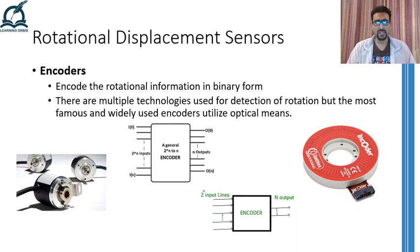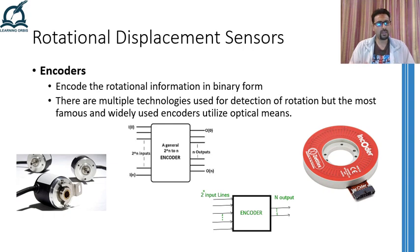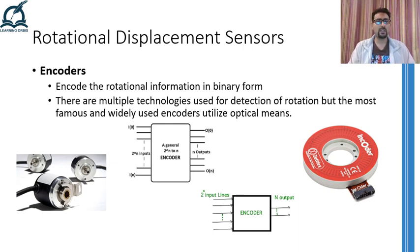The name encoder just means something that can encode or translate information from one state to another state. Therefore, any device that is converting information from one form to some other form, preferably in binary form, is called an encoder. The devices used to encode the rotational displacement information into binary form are so widely used around the world that whenever you hear the word encoder, the only thing that will come into your mind will be the encoder which I am going to discuss in this video.